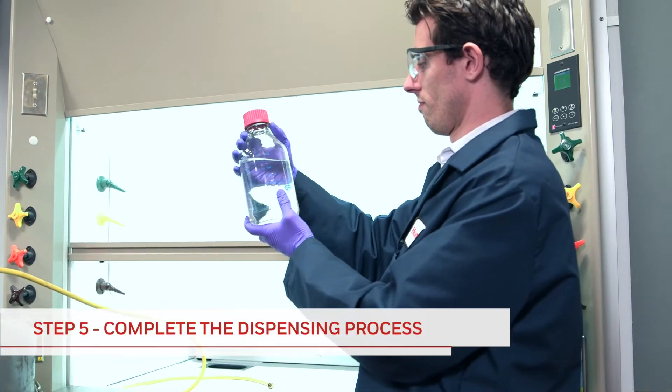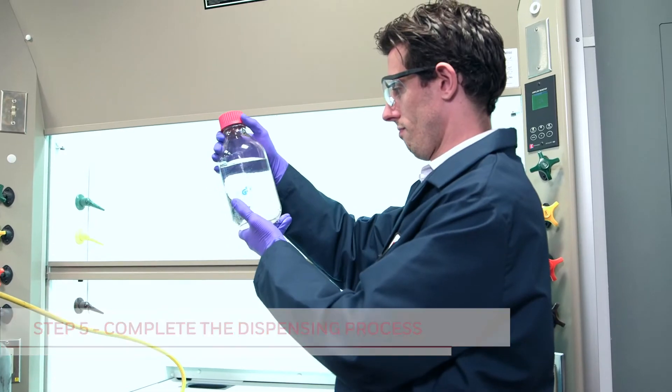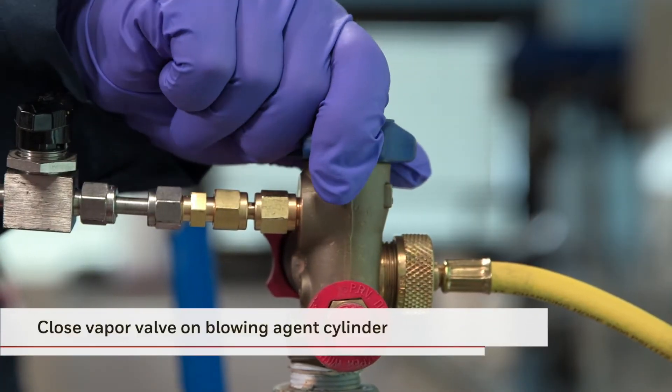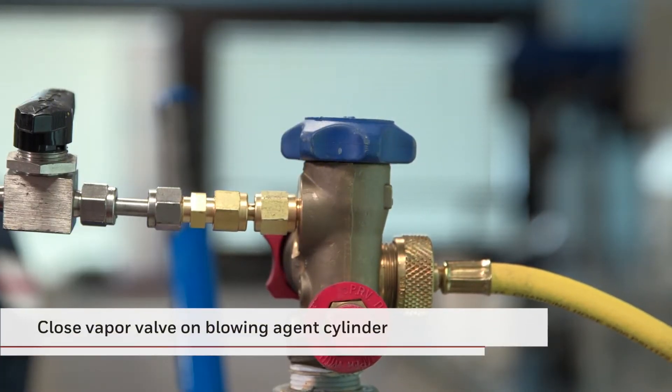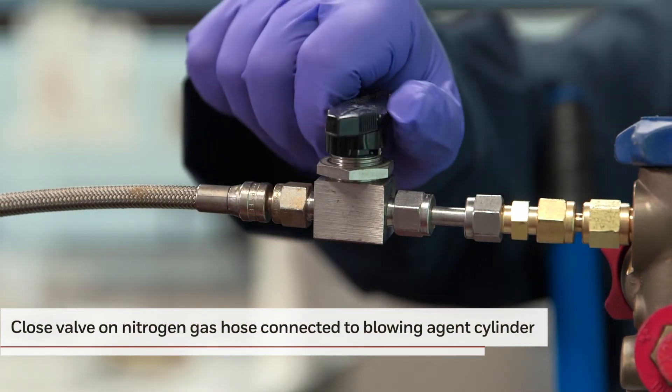You can take the following steps to conclude the process. First, close the vapor valve on the blowing agent cylinder. Next, close the valve on the nitrogen gas hose.